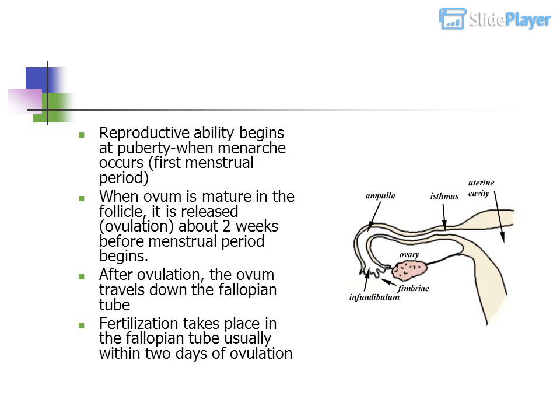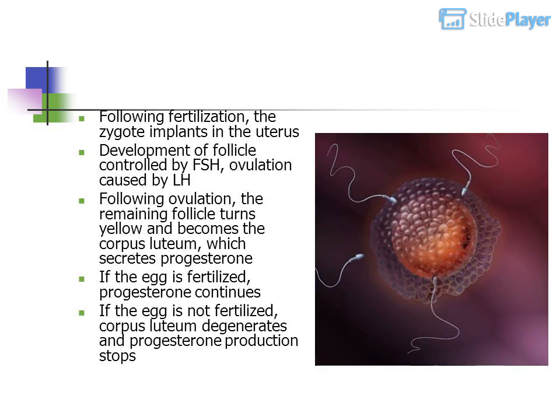After ovulation, the ovum travels down the fallopian tube. Fertilization takes place in the fallopian tube, usually within two days of ovulation. Following fertilization, the zygote implants in the uterus.